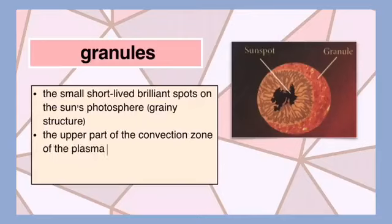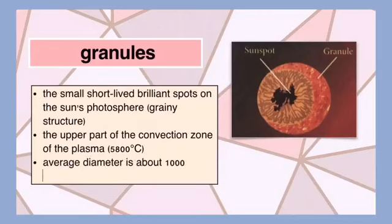Granules are the upper part of the convection zone of the plasma with temperatures as high as 5,800 degrees Celsius. The average diameter of a granule is about 1,000 kilometers.